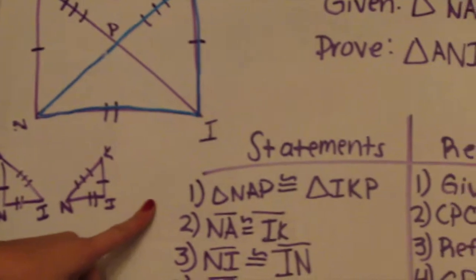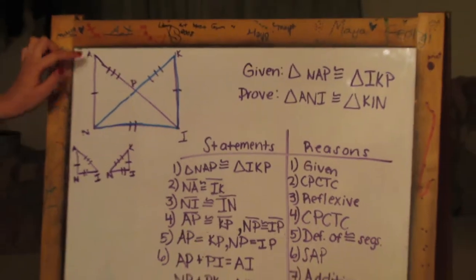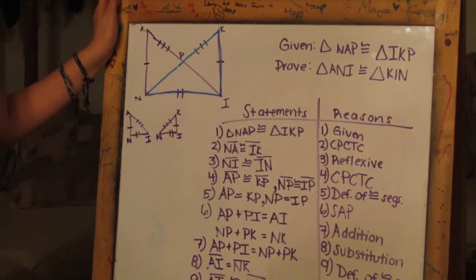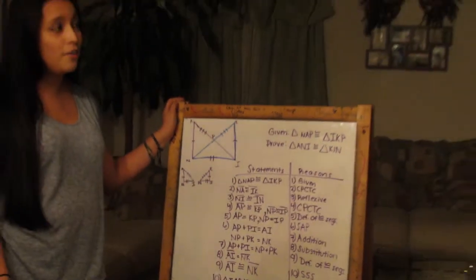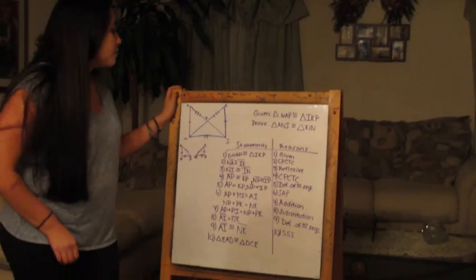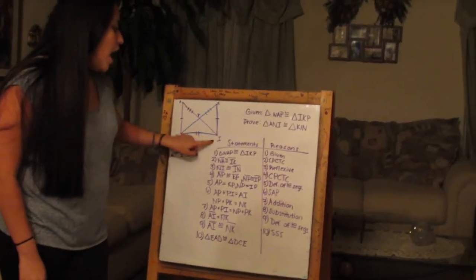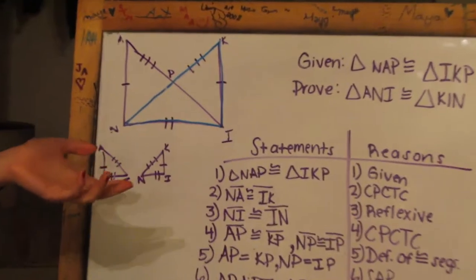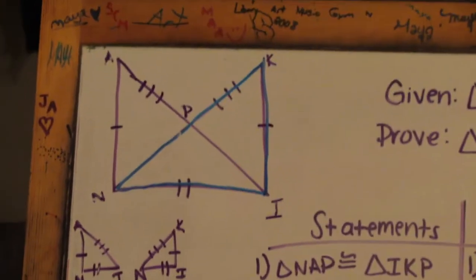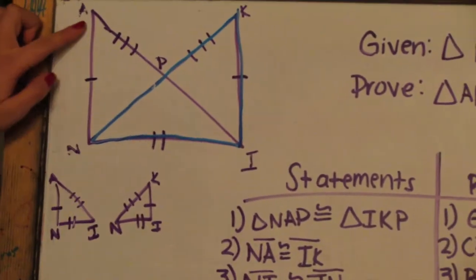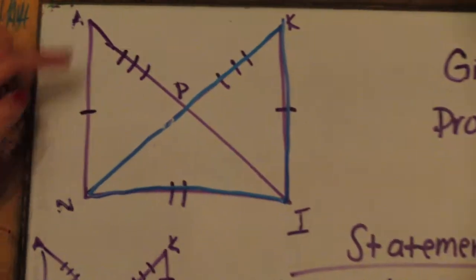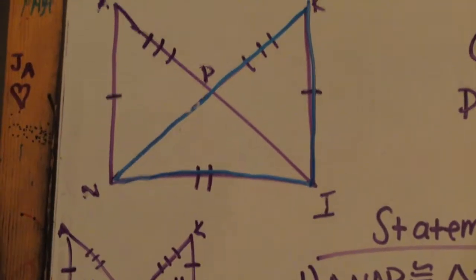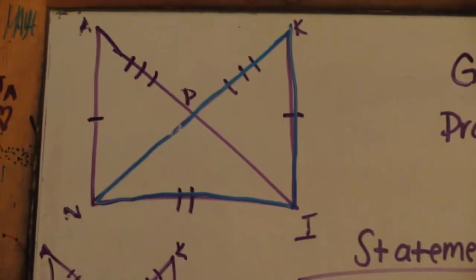Now, for our first step, we wrote the given again. And then we said that NA is congruent to IK because of CPCTC, which we taught you before. Which means that corresponding congruent parts of a triangle or any shape really are congruent. And then we said that NI is congruent to IN because of reflexive. It's just congruent to itself. That's what it's essentially saying. And then AP is congruent to KP. And NP is congruent to IP here because of CPCTC as well.